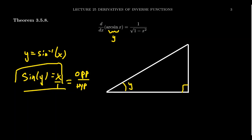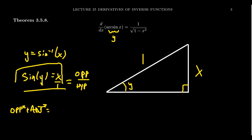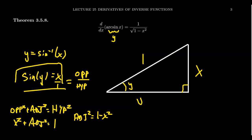With this triangle in mind, the sine ratio is x over 1, where sine, as we know, is opposite over hypotenuse. So x is the opposite side and the hypotenuse is 1. To fill in the other side, we use the Pythagorean equation: opposite squared plus adjacent squared equals hypotenuse squared. Plugging in what we know: x squared plus adjacent squared equals 1. Solving for the adjacent side, we get adjacent squared equals 1 minus x squared, so the remaining side is the square root of 1 minus x squared. We can construct this right triangle associated to the angle y.